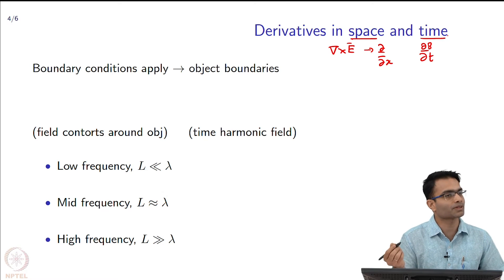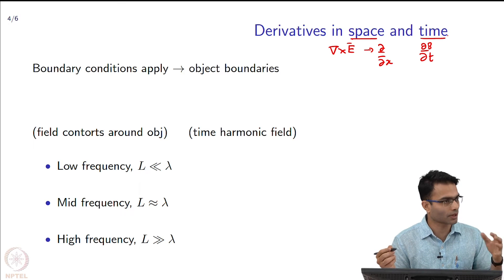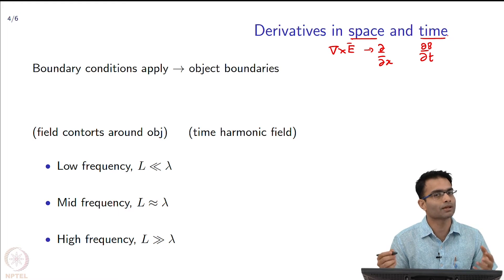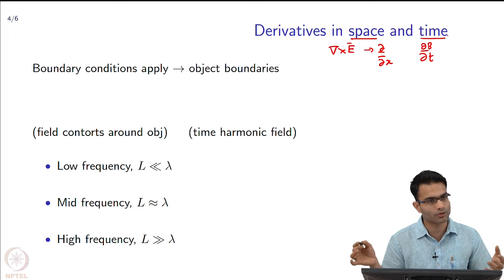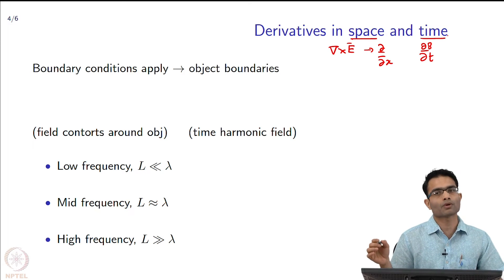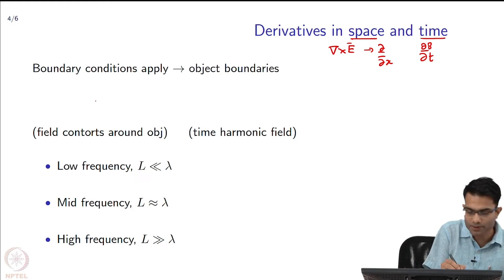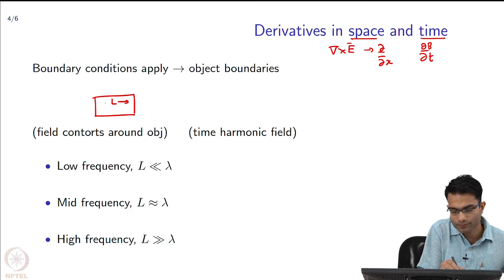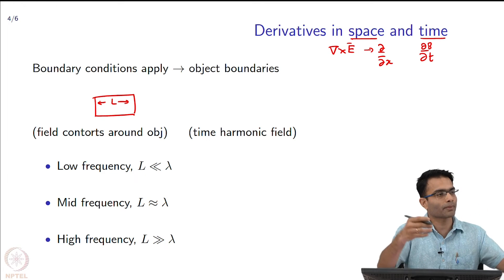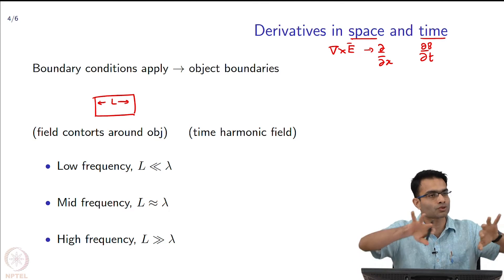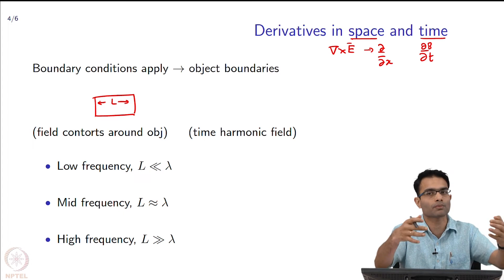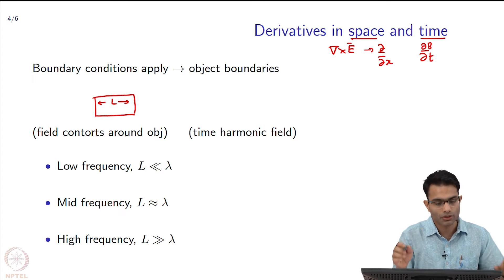The other thing about Maxwell's equations — and you would have heard this in your undergraduate course on electromagnetics — is boundary conditions. Some boundary conditions have to be satisfied by the field on the boundary, and we will look at those as we go. Intuitively, if I have an object of size L, the electromagnetic field flowing around this object has to respect this boundary — it has to bend around it and twist around it; it cannot behave as though the object is not there.